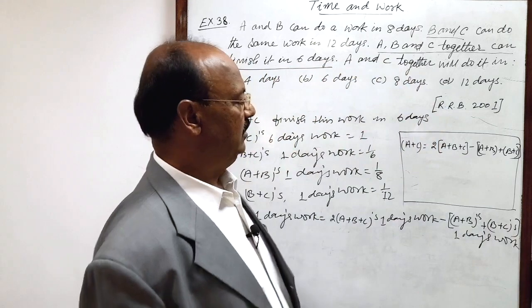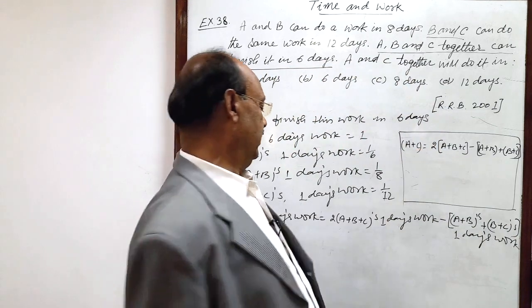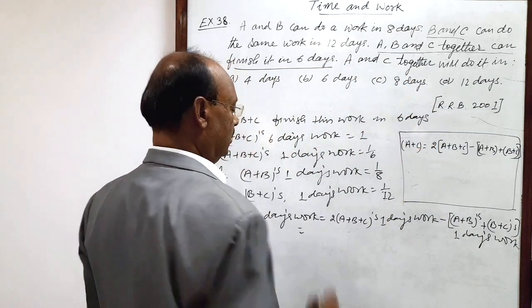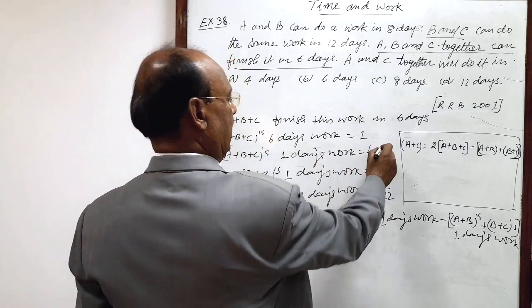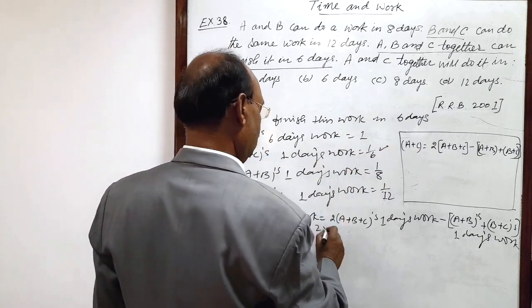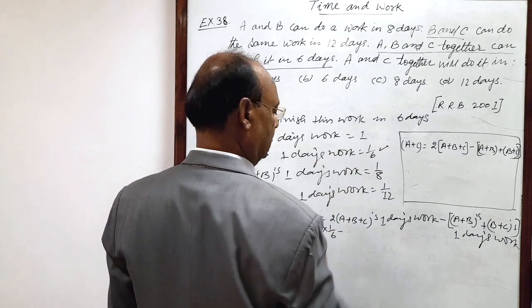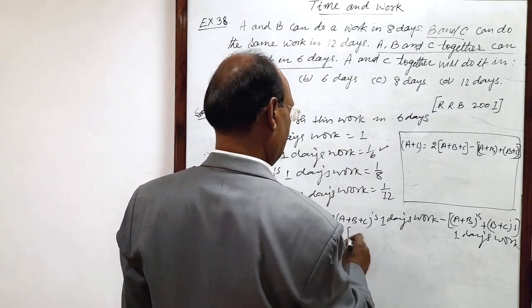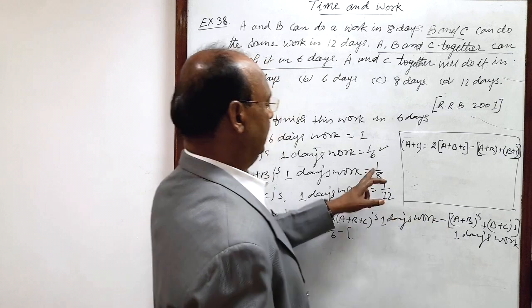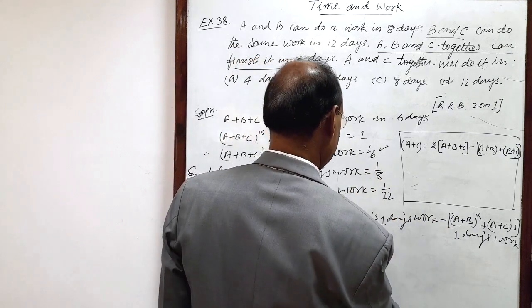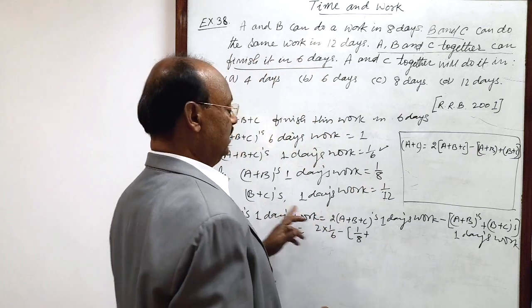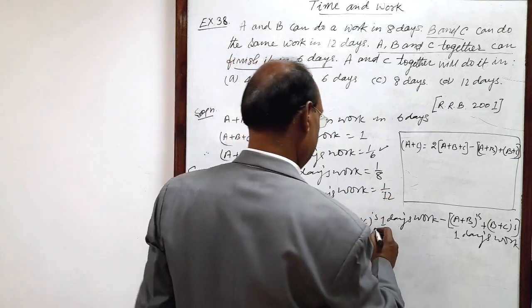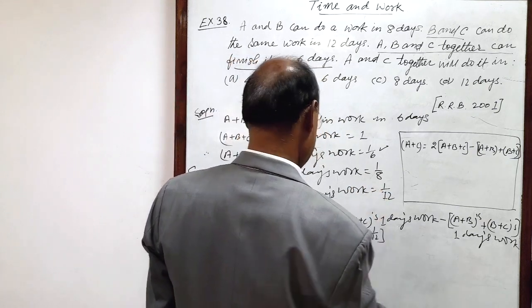Just try to understand, then we will get A plus C's 1 day's work. And this is equal to 2 times 1 by 6 minus 1 by 8 minus 1 by 12. Let us simplify it.